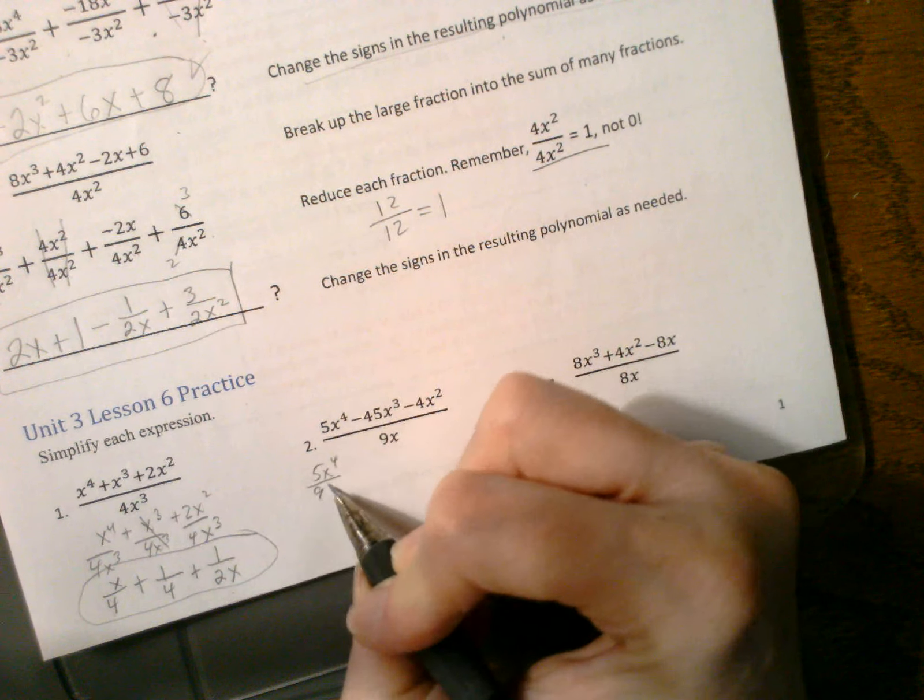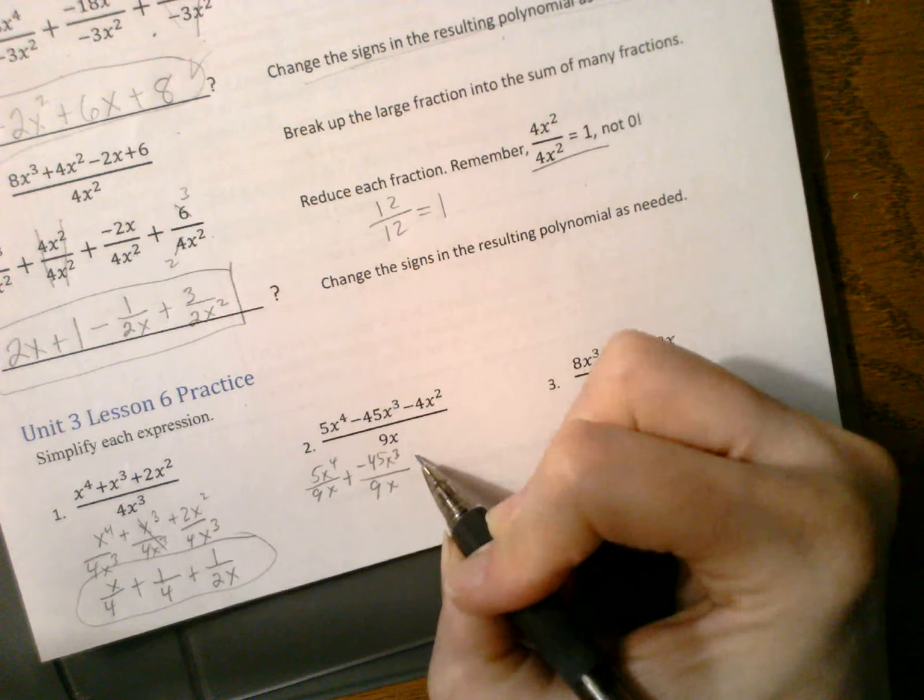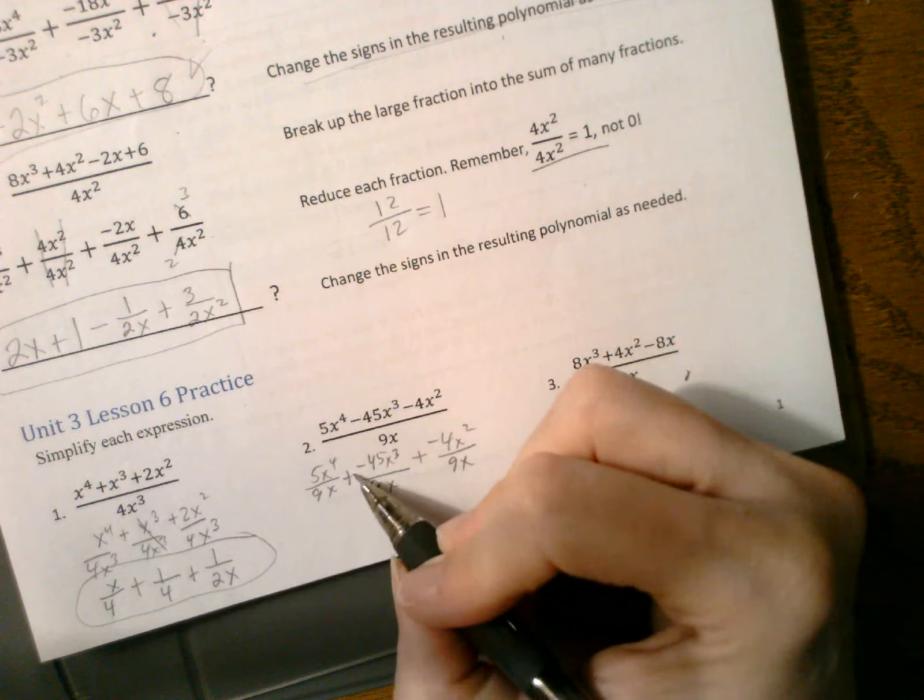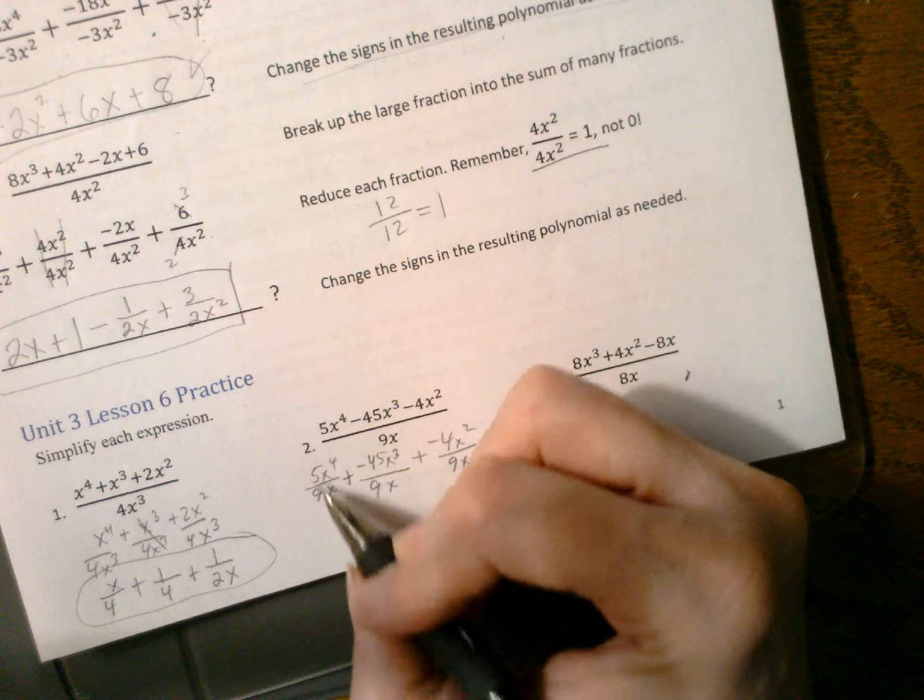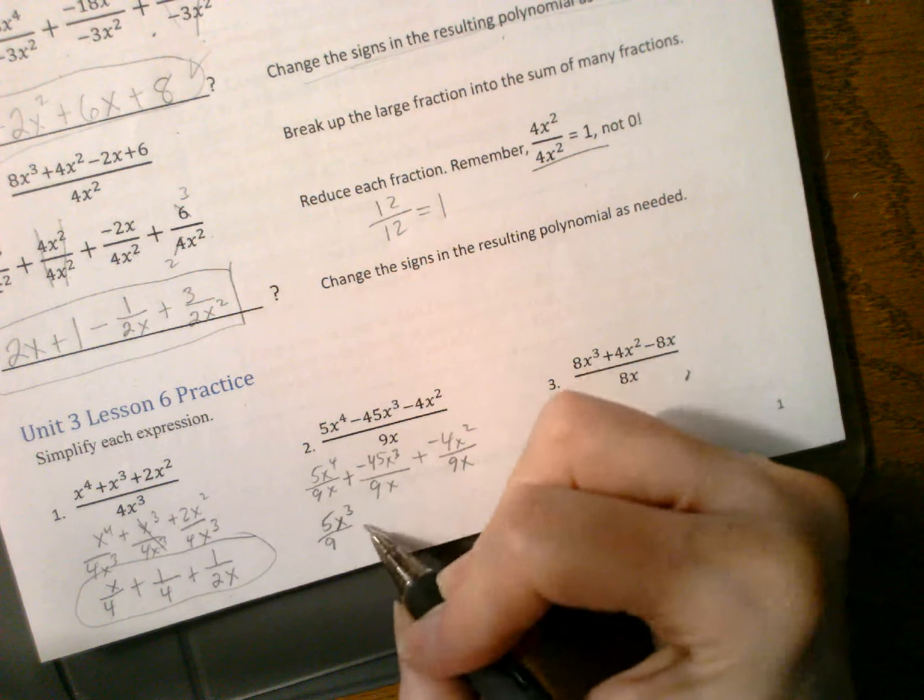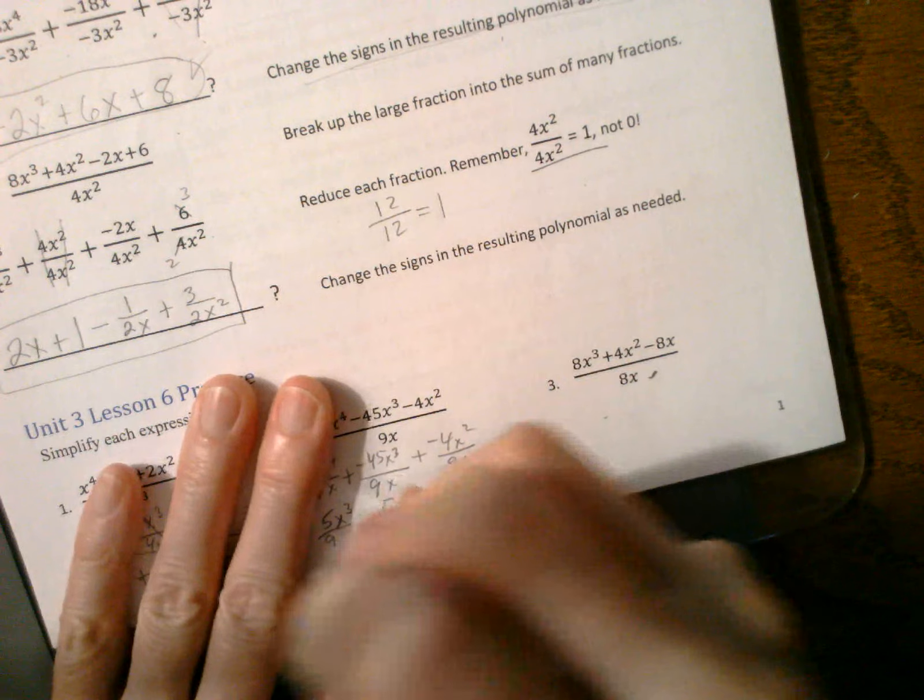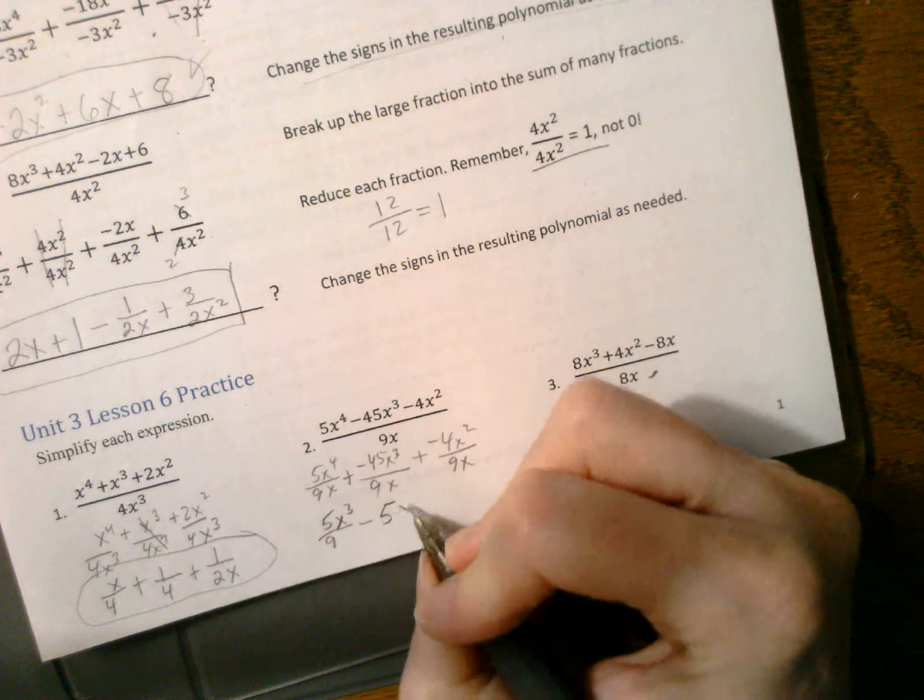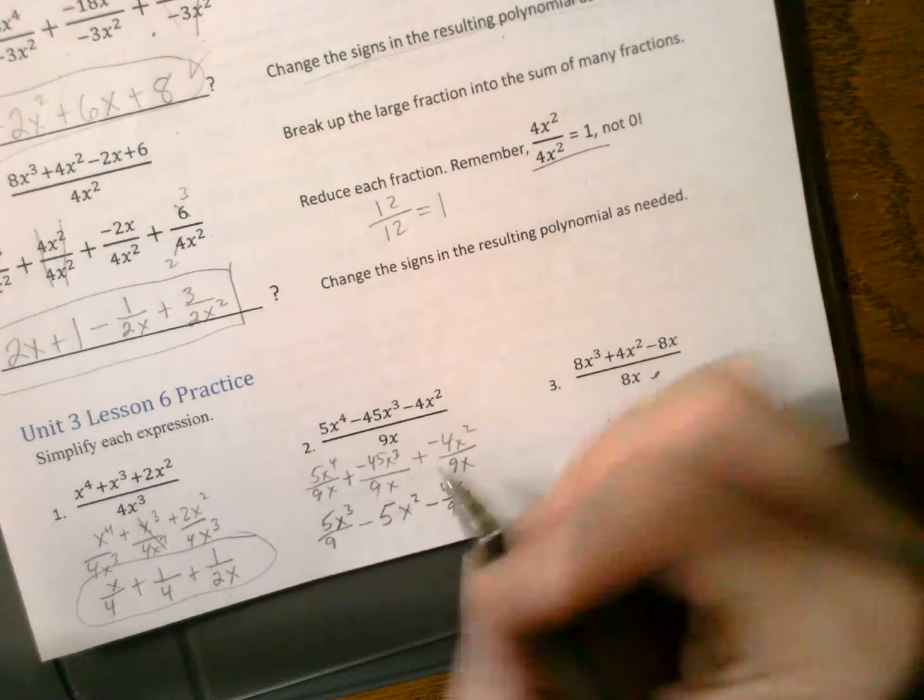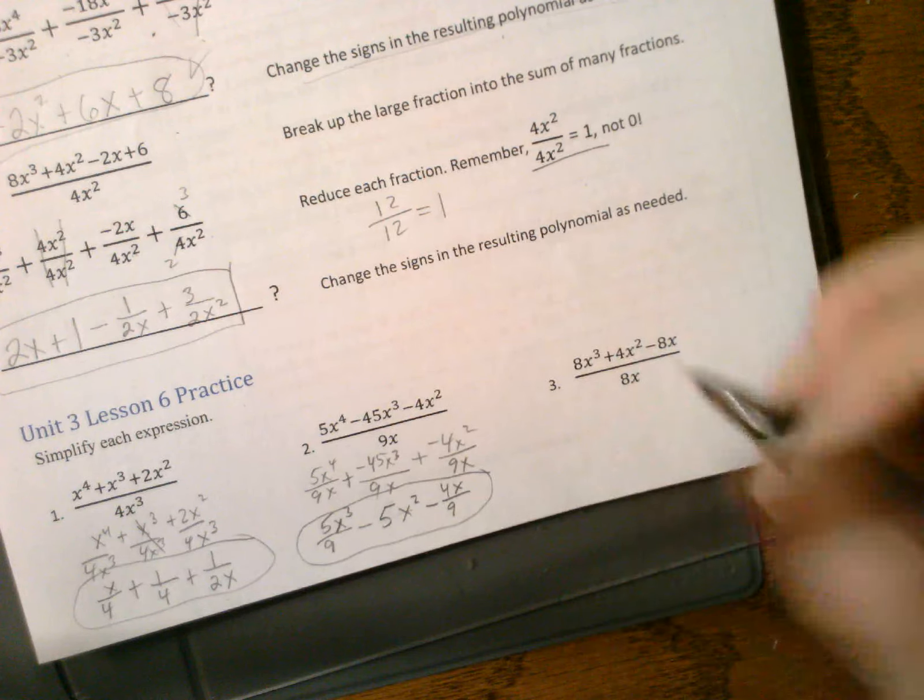5x⁴ over 9x plus a negative 45³ over 9x plus a negative 4x over 9x. This is the way I do them. This is just a sum of fractions. So this doesn't reduce. But it has more x's on top. This is going to be a negative 5x squared minus 4 over 9x. Now, the ones in the homework have multi-variables. So I'm sorry there is an example here.